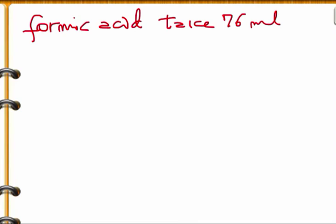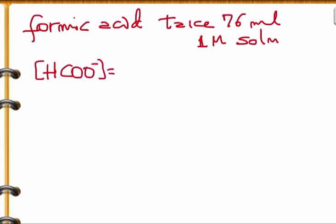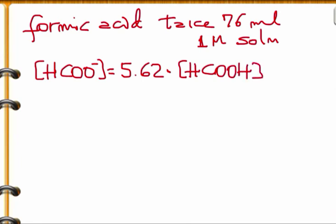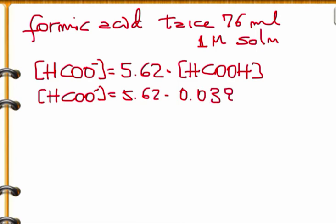These are very real problems in the lab — we work with what's available. Now let's calculate the formate. From the earlier equation, [HCOO⁻] equals 5.62 times [formic acid], derived from the Henderson-Hasselbalch equation. The concentration of formate is therefore 5.62 times 0.038, which gives 0.213 molar formate. But formate was given as a solid — sodium formate.